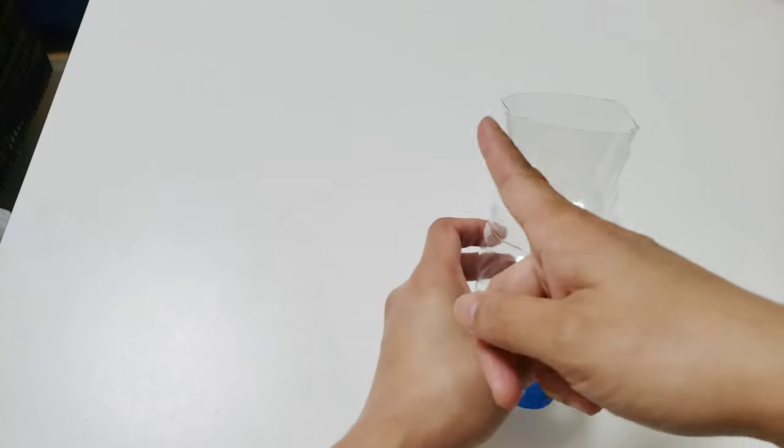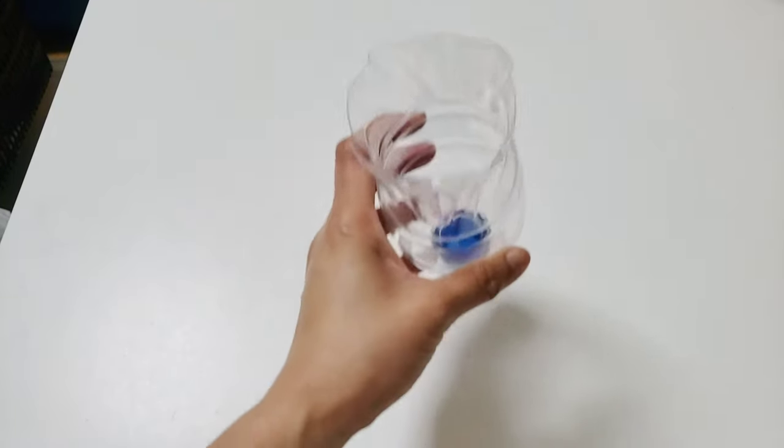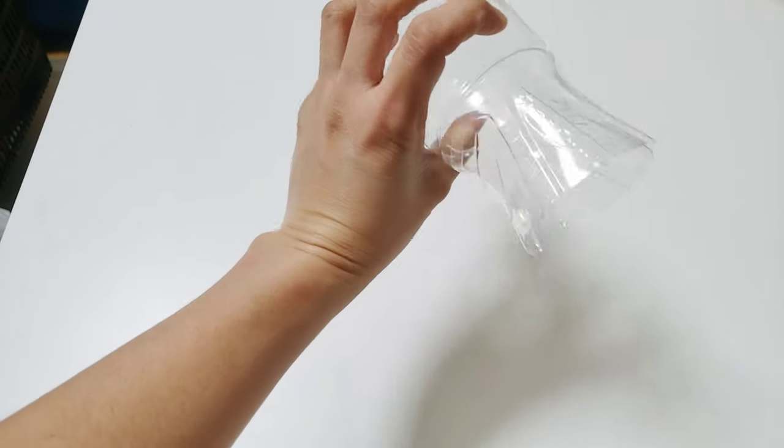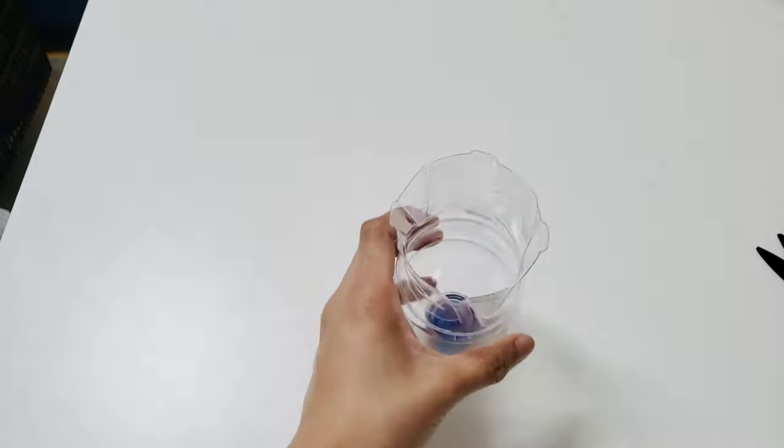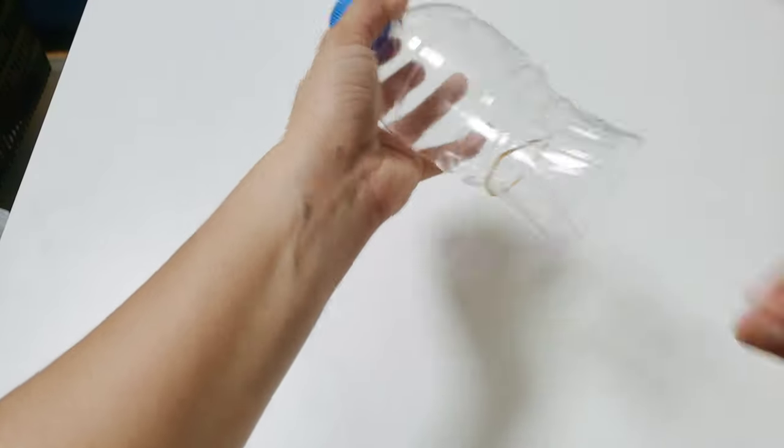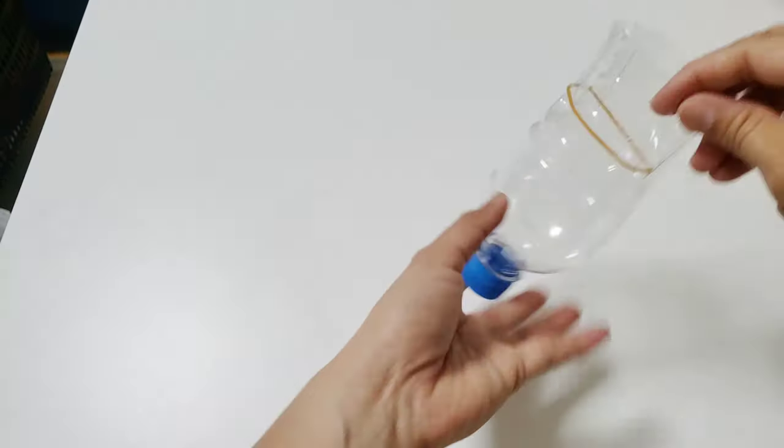Then cut four notches around the edge. Slide the rubber bands through the notches. You may tighten the rubber band for better power.